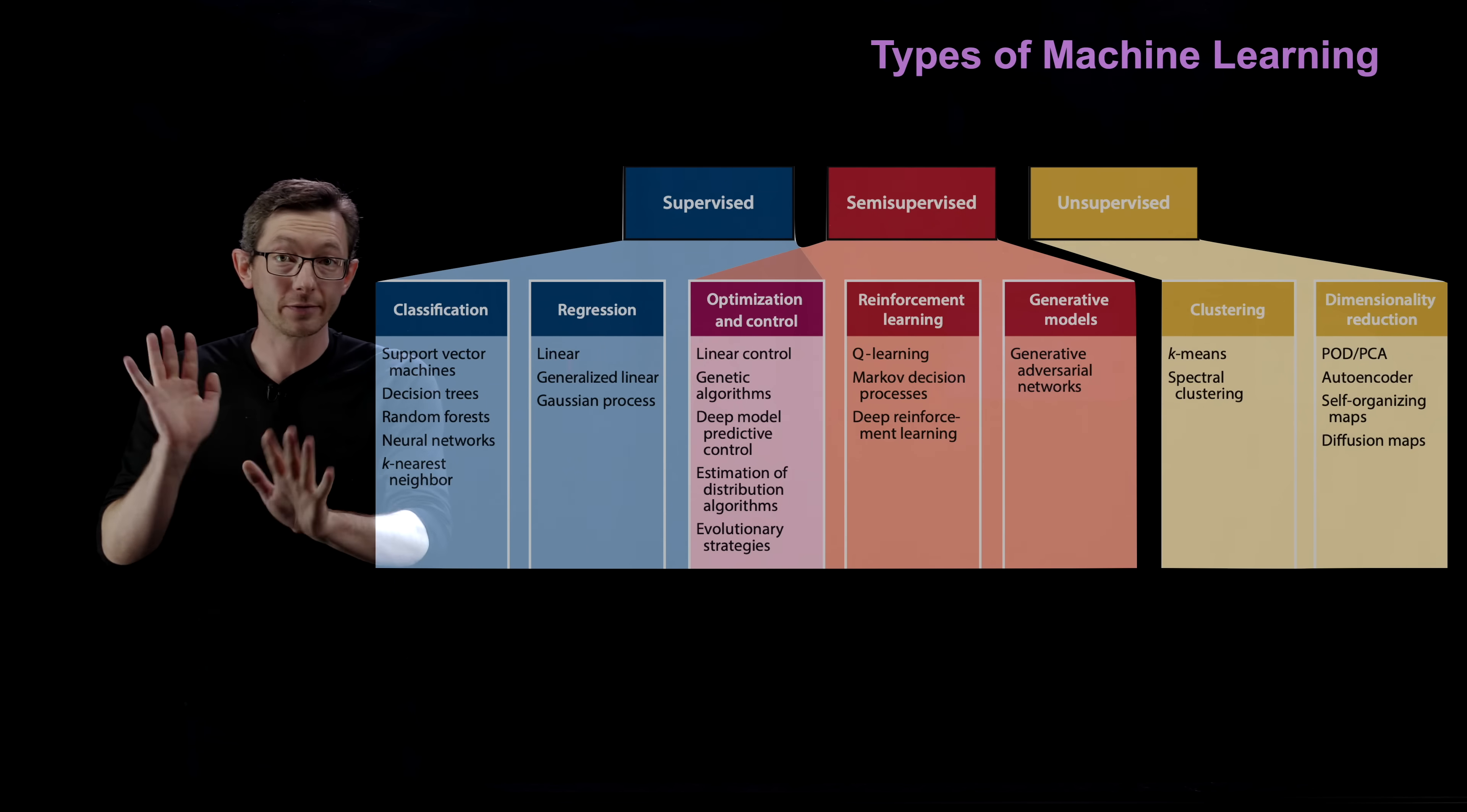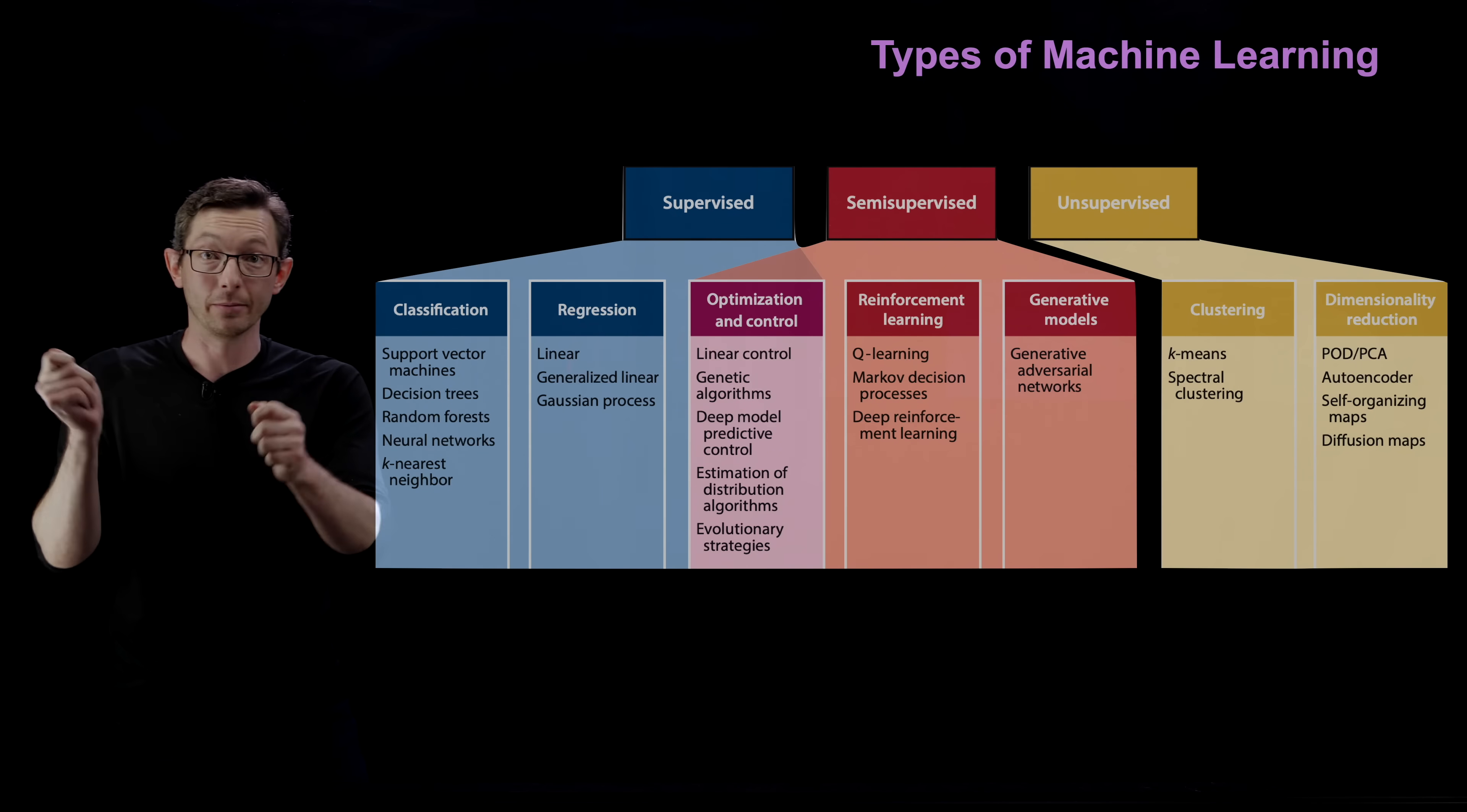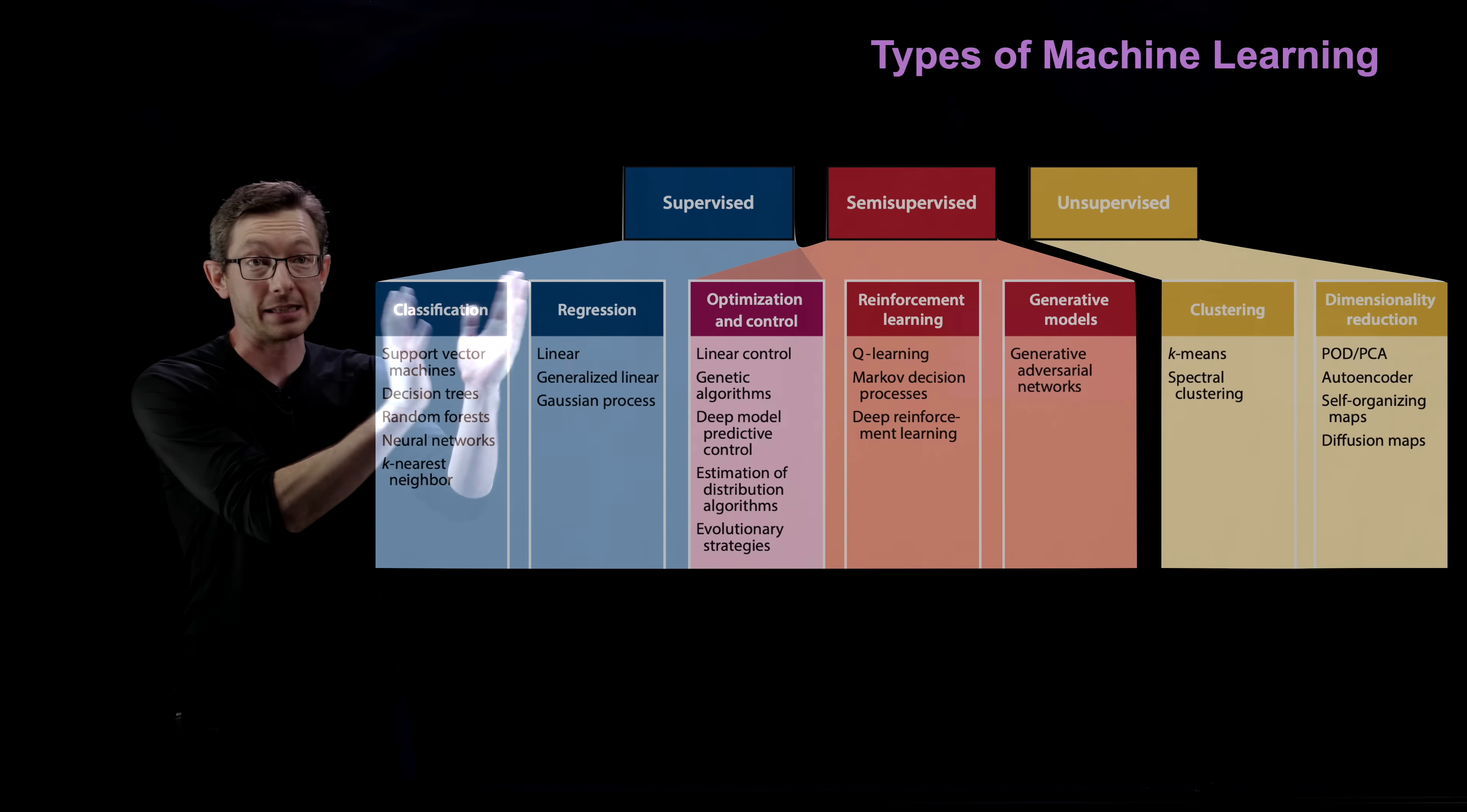If I have a bunch of images of dogs and cats and I'm trying to build a classifier, if all of those training data images are labeled by hand, someone labeled them, this is a dog, this one's a cat, this one's another dog. If they're labeled, then the machine learning algorithm that you develop to tell dogs and cats apart is a classifier.